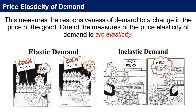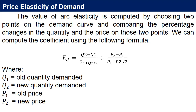Price elasticity of demand measures the responsiveness of demand to a change in the price of the good. One of the measures of the price elasticity of demand is arc elasticity. The value of arc elasticity is computed by choosing two points on the demand curve and comparing the percentage changes in the quantity and the price on those two points. We can compute the coefficient using the following formula, where Q1 equals old quantity demanded, Q2 equals new quantity demanded, P1 equals old price, P2 equals new price.